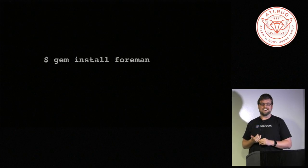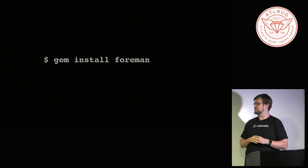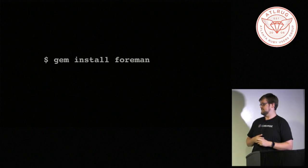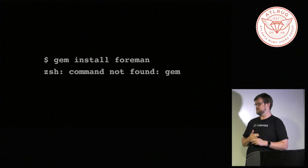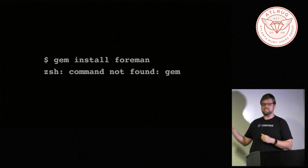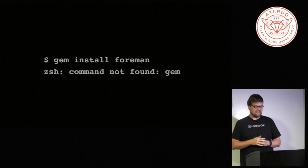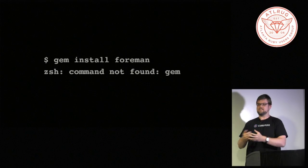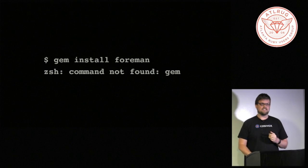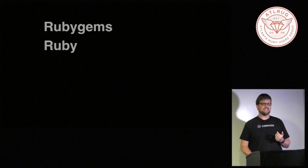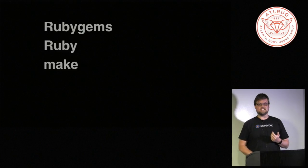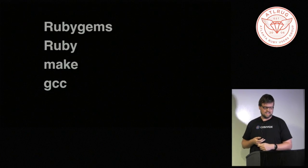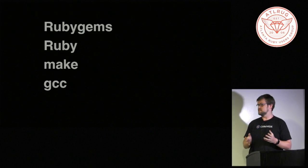It turns out this problem is not unique to Rails — PHP applications, all these web frameworks — everybody had the same problem of running two or three different things to keep their applications running. I started getting bug reports saying 'I'm trying to install your software, I have no idea what to do.' Python developers got mad at me because I was asking them to install Ruby. So I took inventory of what Foreman actually needs: RubyGems, a specific version of Ruby, and it turns out I was using C dependencies, so you also need make and GCC. The instructions for installing Foreman became way more complicated than Foreman itself.